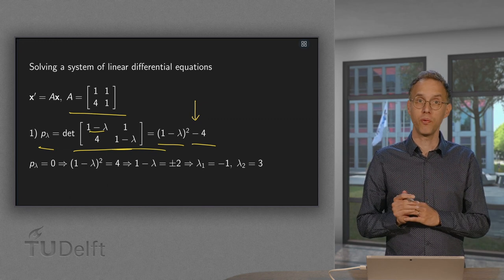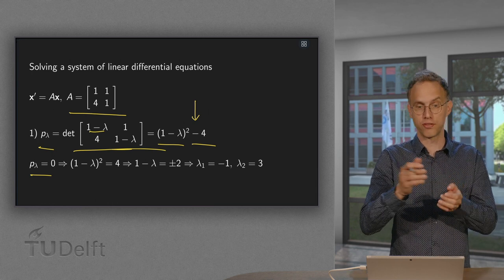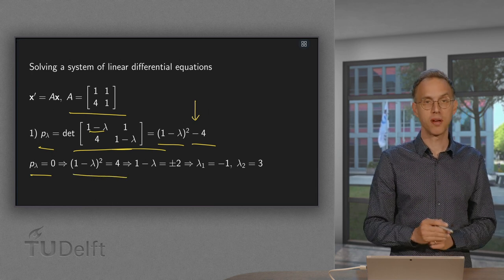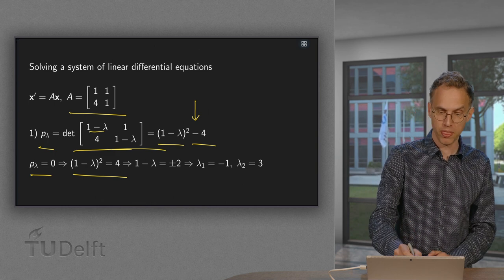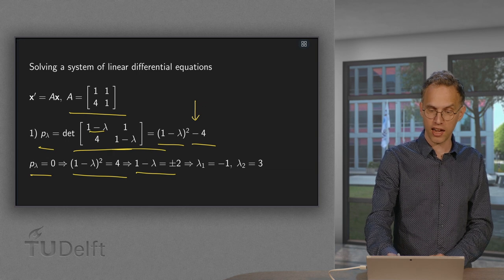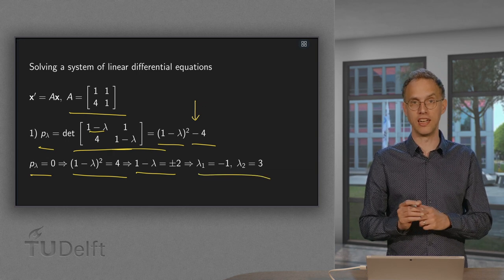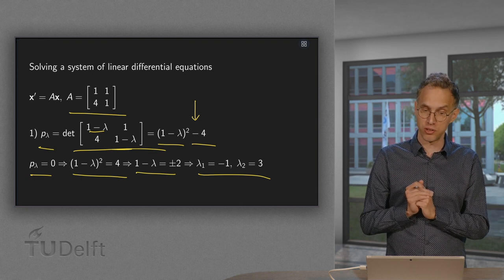Now we have to set p_λ equal to 0. So (1 - λ)² minus 4 equals 0 or (1 - λ)² equals 4. So 1 - λ equals plus or minus 2. And our eigenvalues λ₁ equals -1 and λ₂ equals 3. So there we have our eigenvalues.